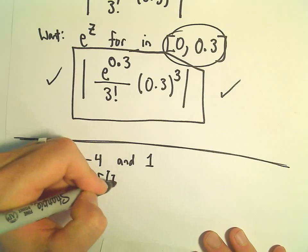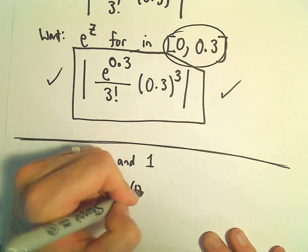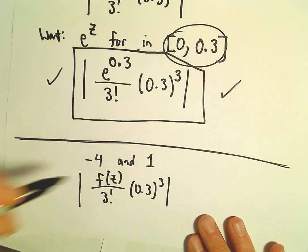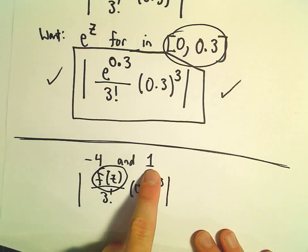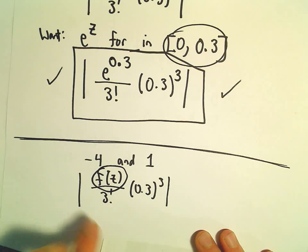You know, f of z over 3 factorial and 0.3 cubed. Suppose we had some function f of z that took on values between negative 4 and 1.